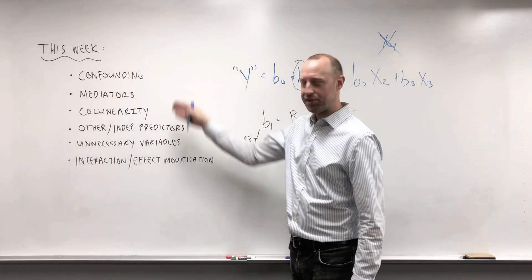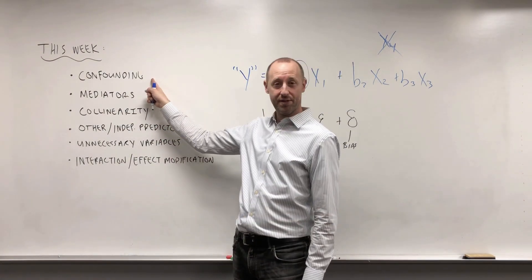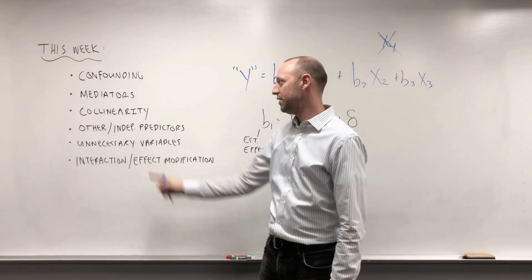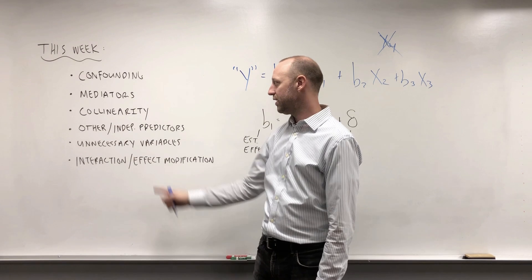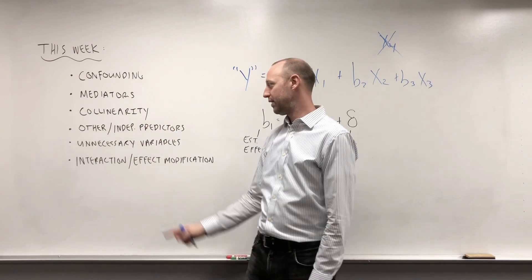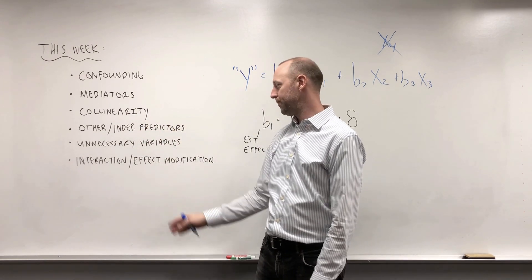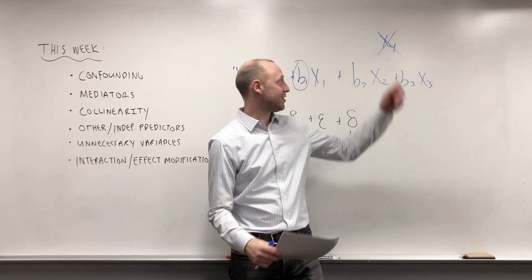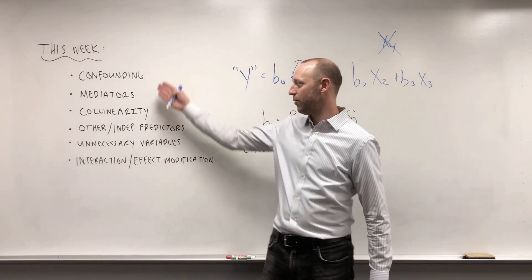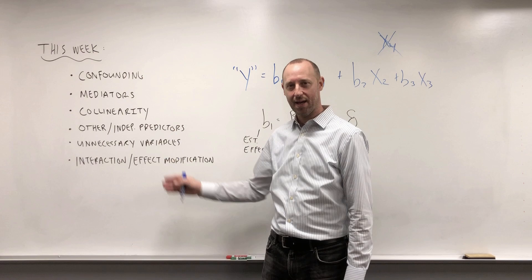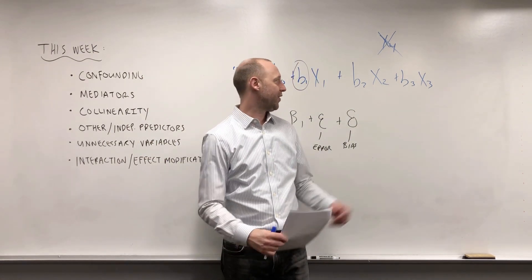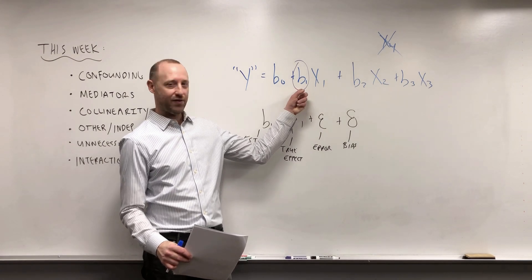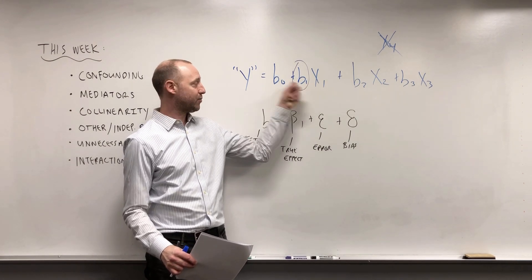Part of those decisions are going to be based on do we think something's a confounder, at which point we want to include it. Does this seem to be mediating the relationship and we might want to exclude it. Is it collinear, is it another predictor of the outcome, is it unnecessary and we should just get rid of it. We're going to talk about what are these different types of variables that can be there and should we include them or exclude them in the model if our goal is to estimate the effect of some variable x1 on the outcome.